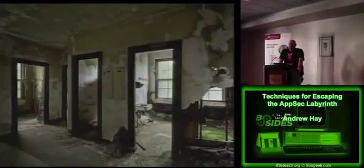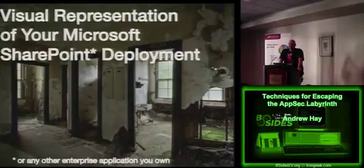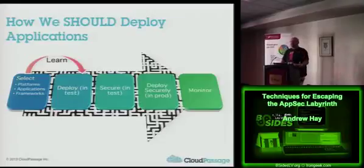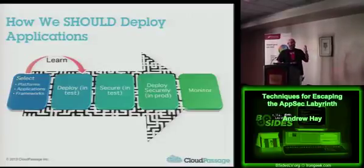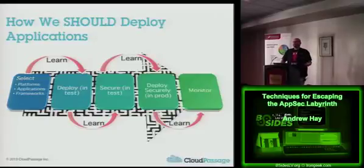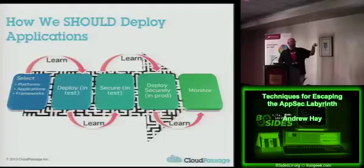And what you get is something like a house that's completely in disarray — usually what your SharePoint deployment will look like even after securing. So this is how I propose you deploy applications: select the platform, application, and framework; deploy it in a test environment; learn what it's doing from selection to initial installation; secure it in that test environment and learn more that way; then deploy securely in production — novel concept, I know — and then monitor it after the fact. There should also be an arrow that goes from monitoring back to selection, because this process should influence future selections and future deployments.